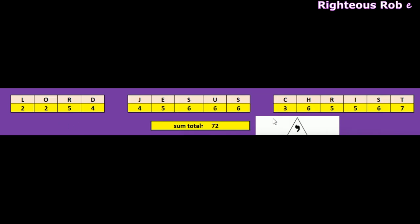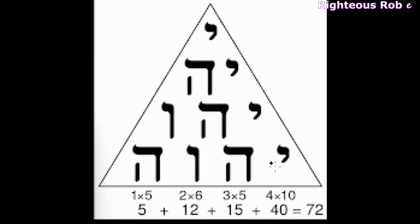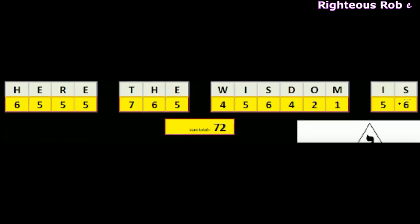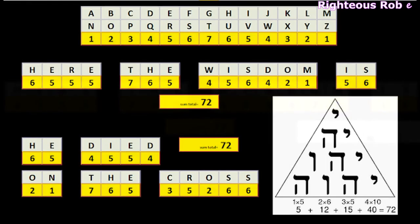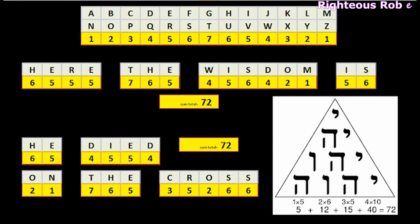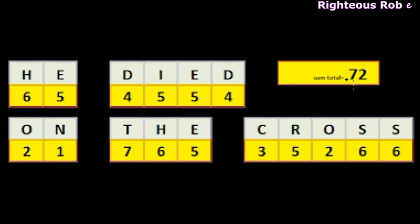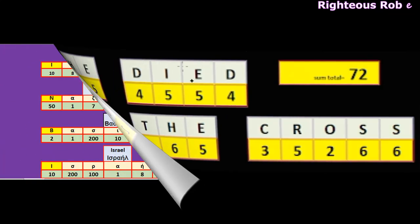The Lord Jesus Christ has a sum total letter value of 72. The Hebrew Gematria sum total letter value of the Tetragrammaton — here the wisdom is — is a sum total letter value of 72. He died on the cross as a sum total letter value of 72.